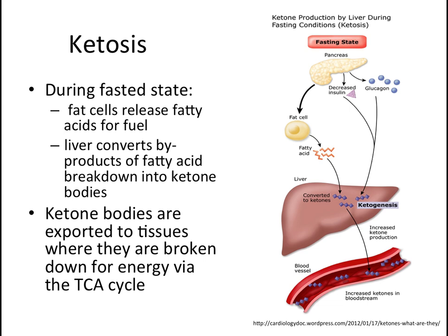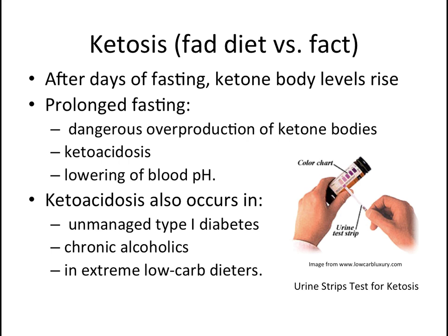This diagram sums up what happens in the fasted state. Insulin secretion decreases, fat cells release fatty acids for use as fuel, and the liver converts byproducts of fatty acid breakdown into ketone bodies, which enter the bloodstream to be taken up and used as fuel. After days of fasting, ketone levels elevate, which can lead to ketoacidosis, in which the pH of the blood decreases — a dangerous and potentially fatal condition. A decrease in blood pH affects the ability of hemoglobin to bind oxygen.